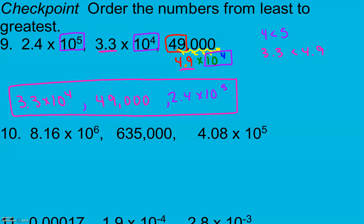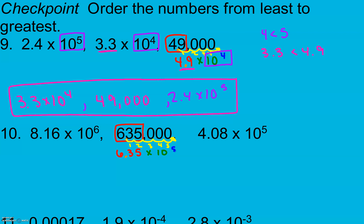Give number 10 a try. Again, we want to get all of our numbers into scientific notation. So 6.35 — I want exactly one number in front of my decimal, then I check how many places I had to move: 1, 2, 3, 4, 5. That gives me 6.35 times 10 to the 5th power.